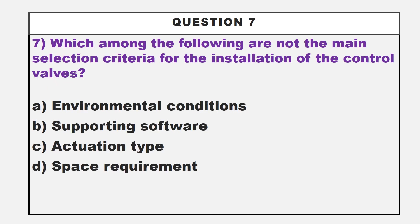This is our 7th question. Which among the following are not the main selection criteria for the installation of control valves? Option A: environmental conditions. Option B: supporting software. Option C: actuation type. Option D: space requirement.